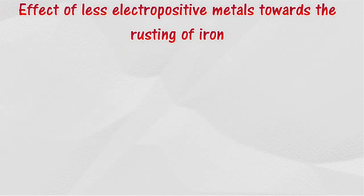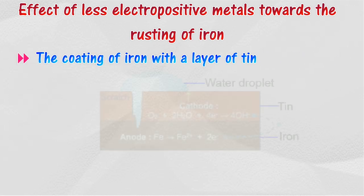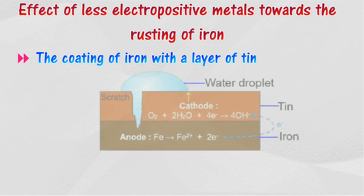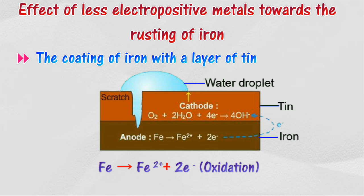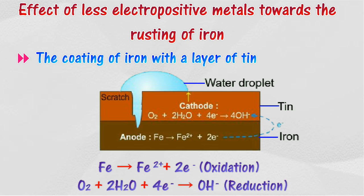Iron corrodes rapidly if it is in contact with a less electropositive metal such as tin, lead, or copper. For example, when iron is coated with a layer of tin, iron will be corroded faster if the protective layer of tin has been scratched. Since tin is less electropositive than iron, iron acts as the negative terminal and releases electrons.